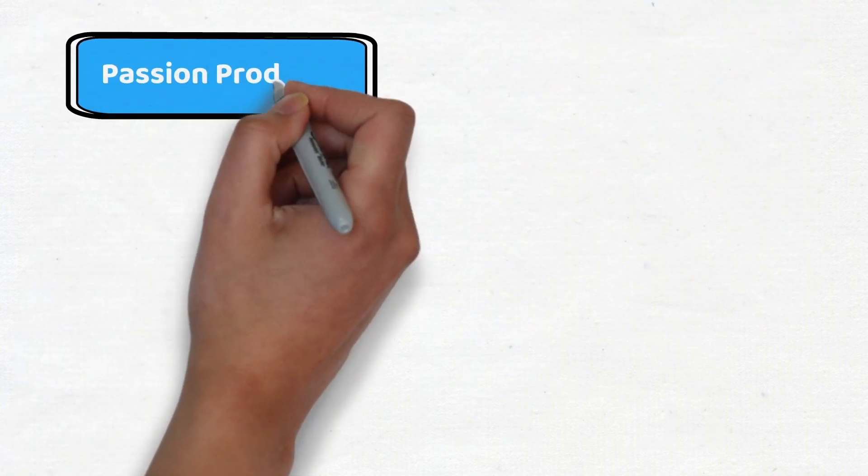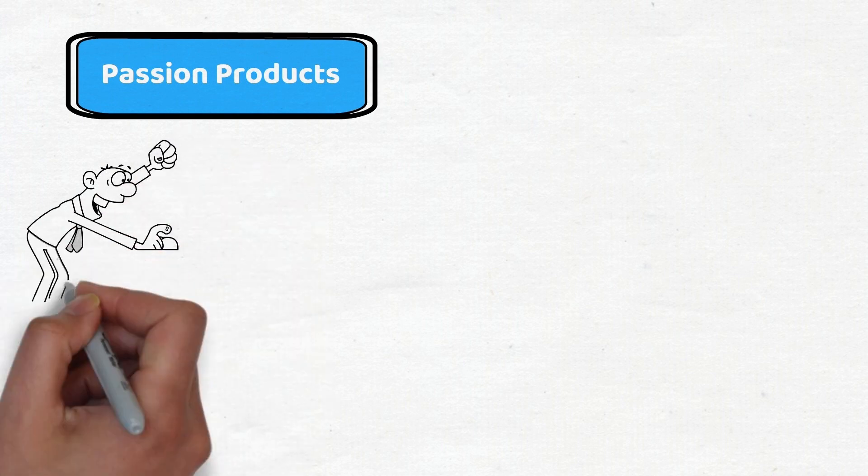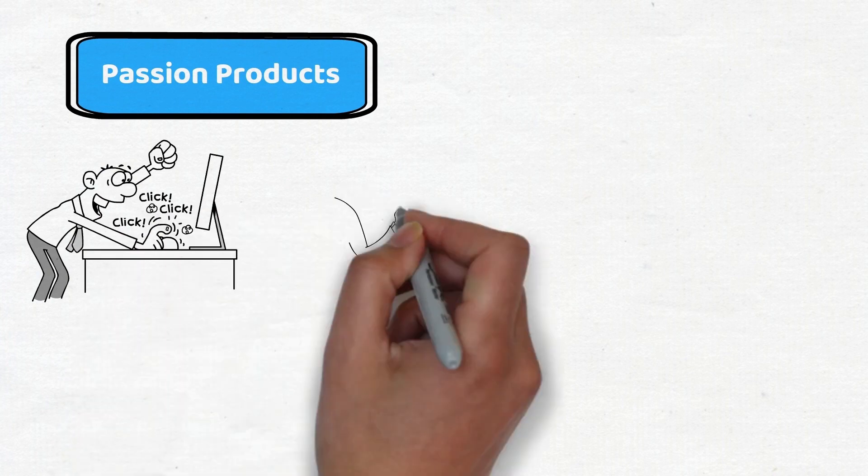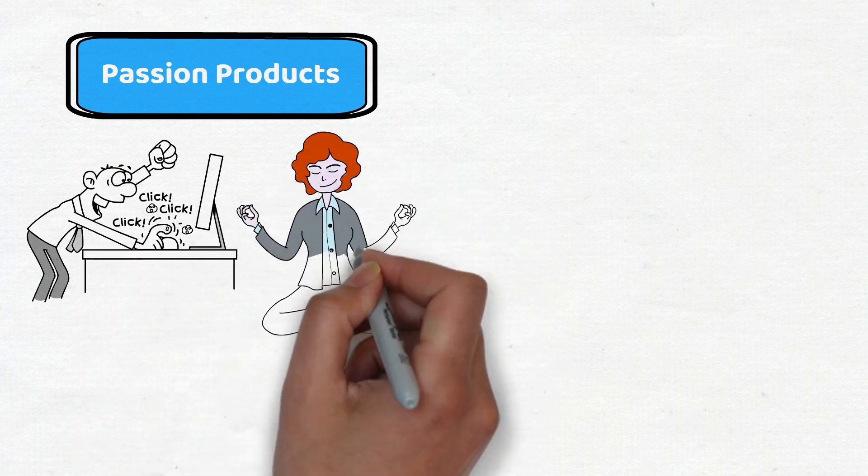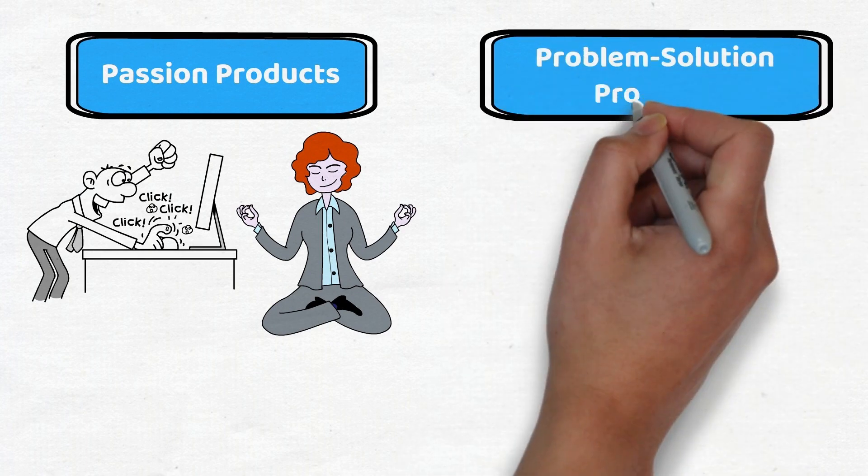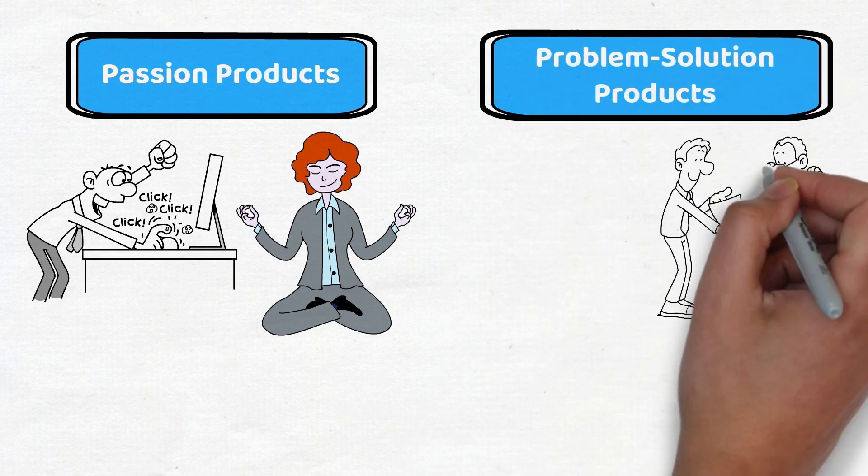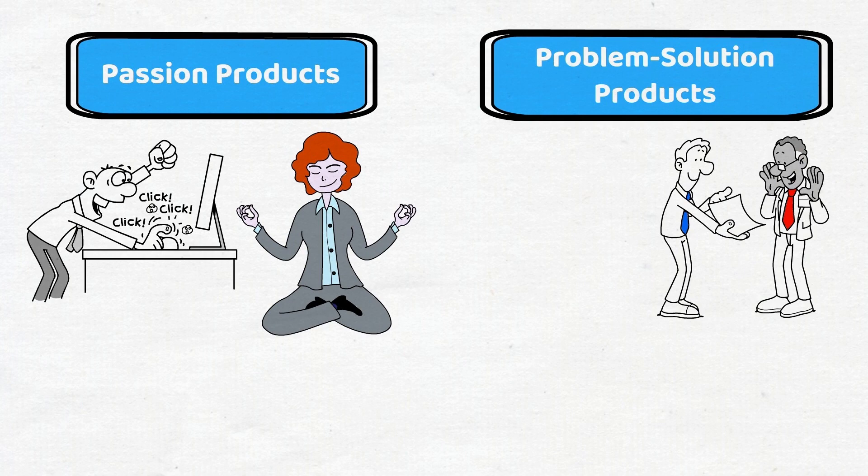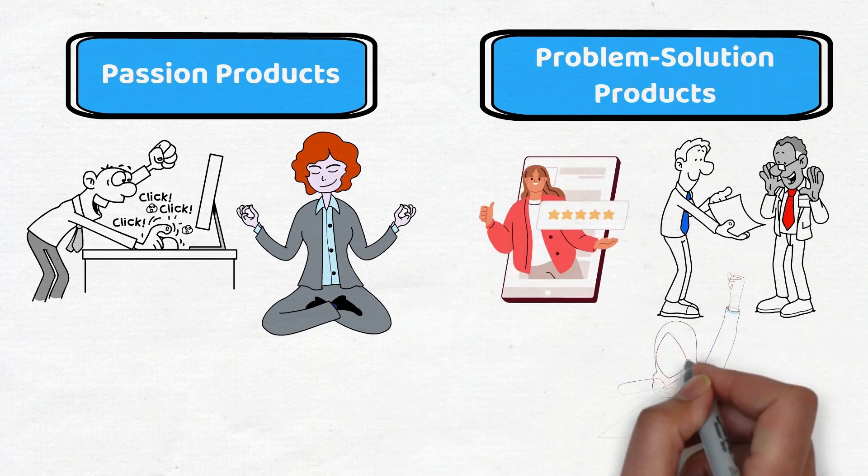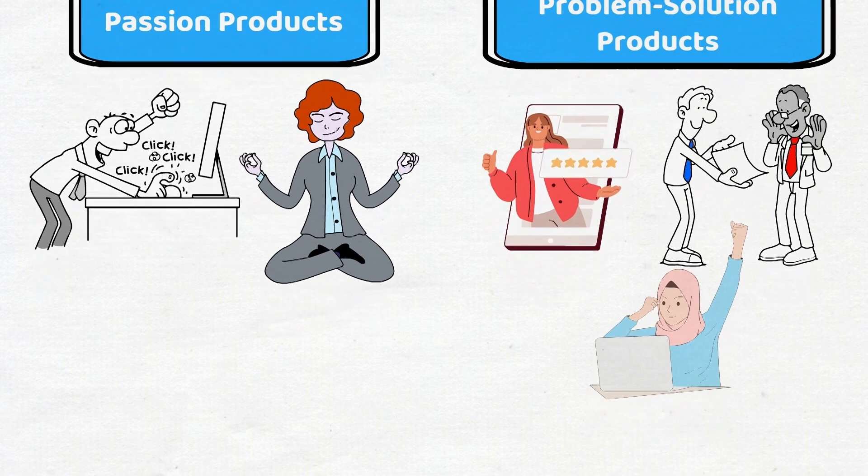The first one, passion products, has the power to ignite profound interest, touching on passions, hobbies, or even the identity of customers. These products create a strong emotional bond with their users. Whereas the second category, problem solution products, addresses a daily issue of consumers directly and efficiently. These items are valued for their obvious utility, offering practical solutions to everyday challenges.